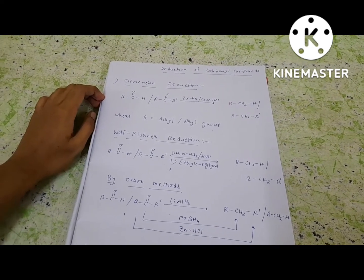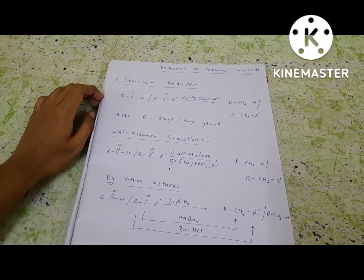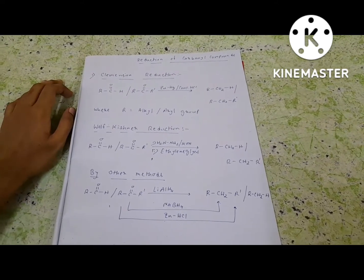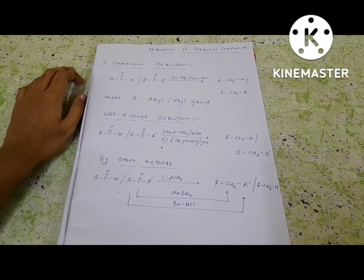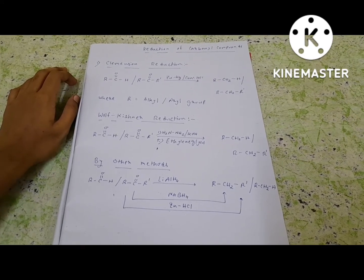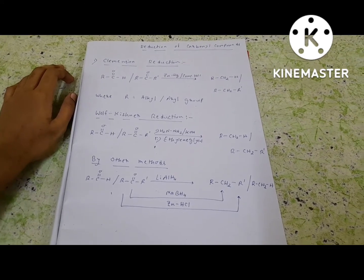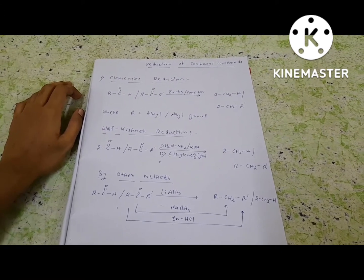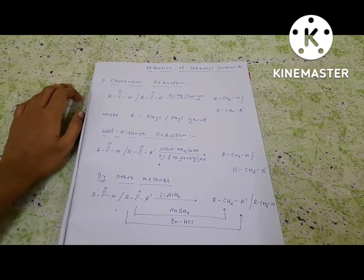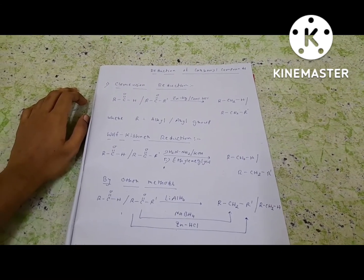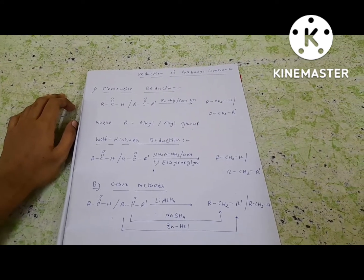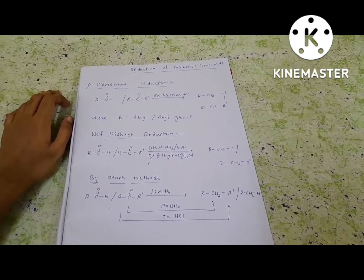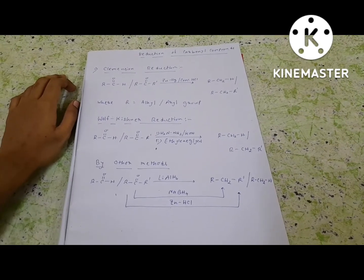Another method is Wolf-Kishner reduction, where both aldehyde and ketone can participate and are converted to an alkane as a product. The reagent is hydrazine in an alkaline or basic medium, and the solvent is ethylene glycol. The product is the same — the carbonyl compound is reduced to an alkane — but the reagent is different.